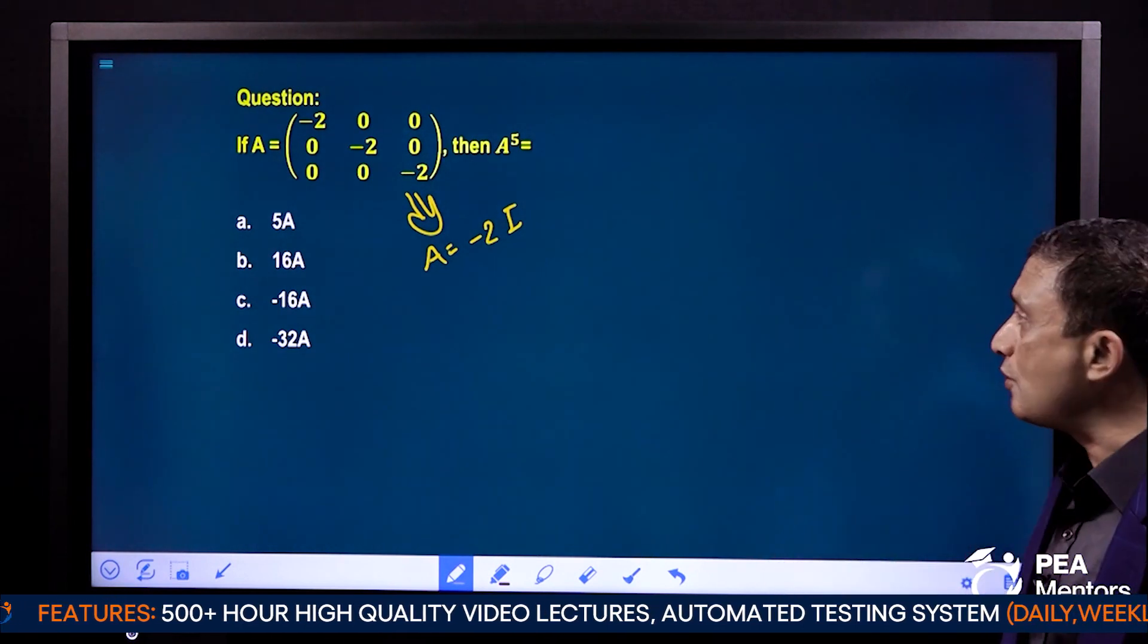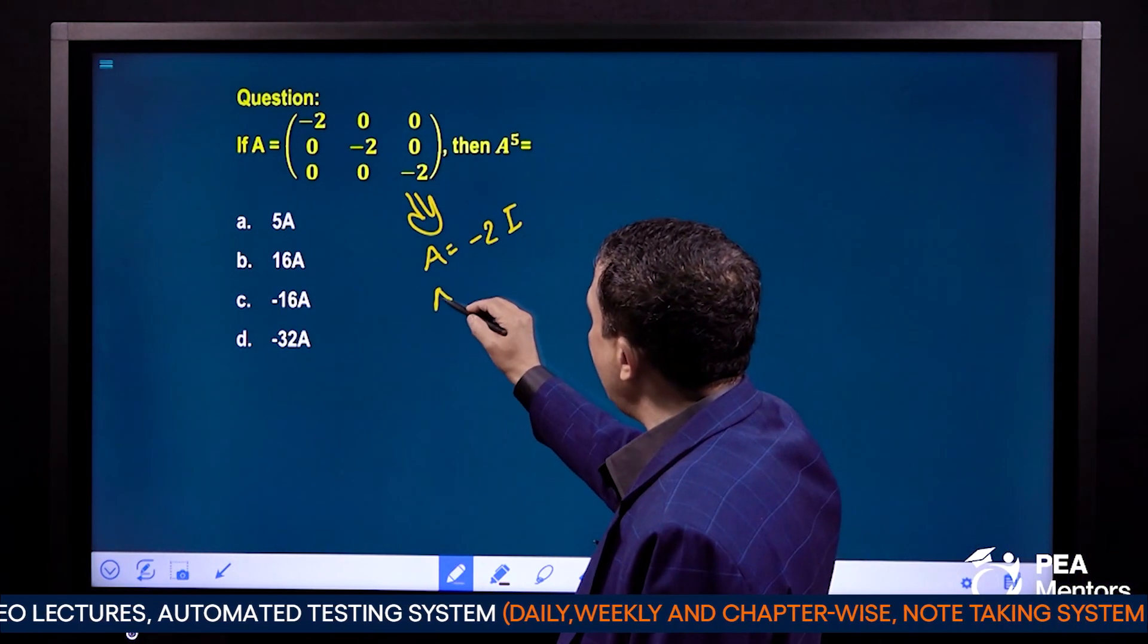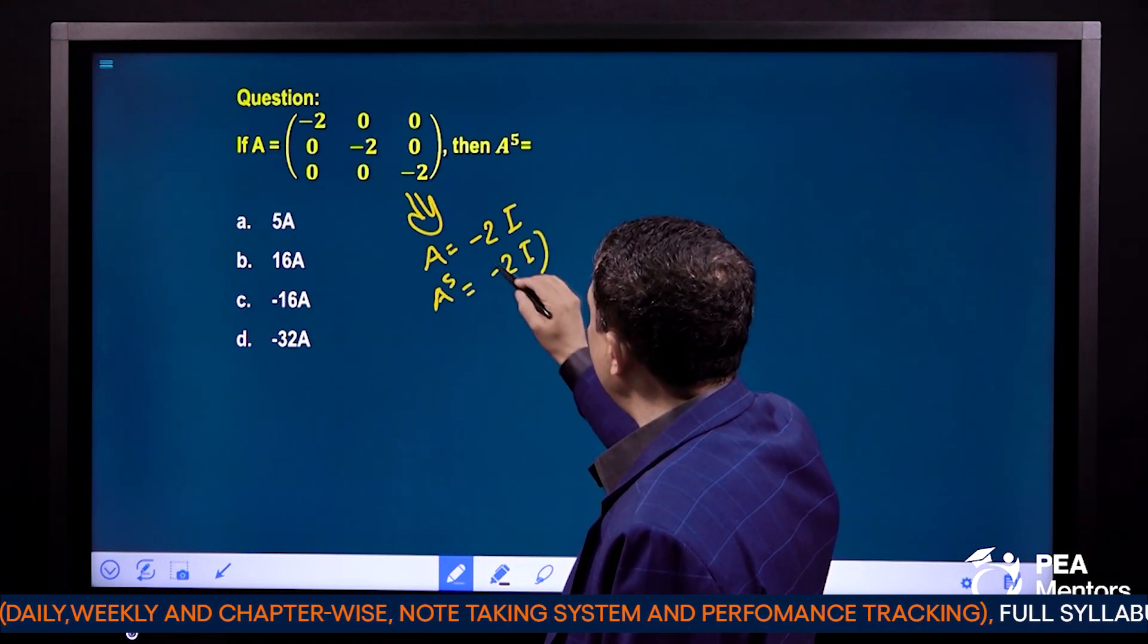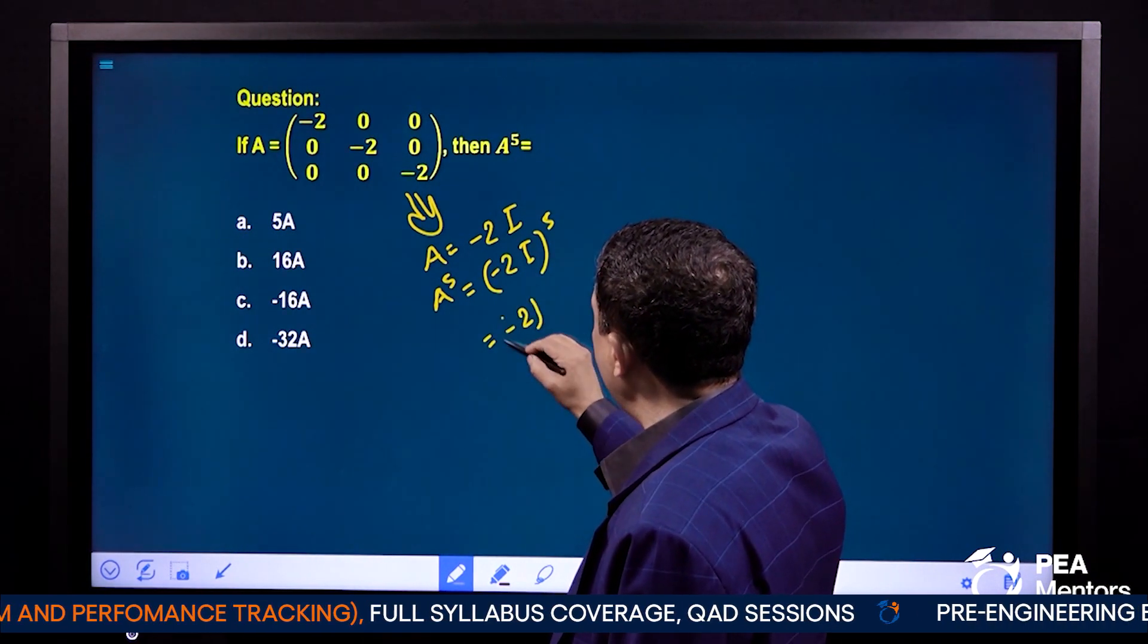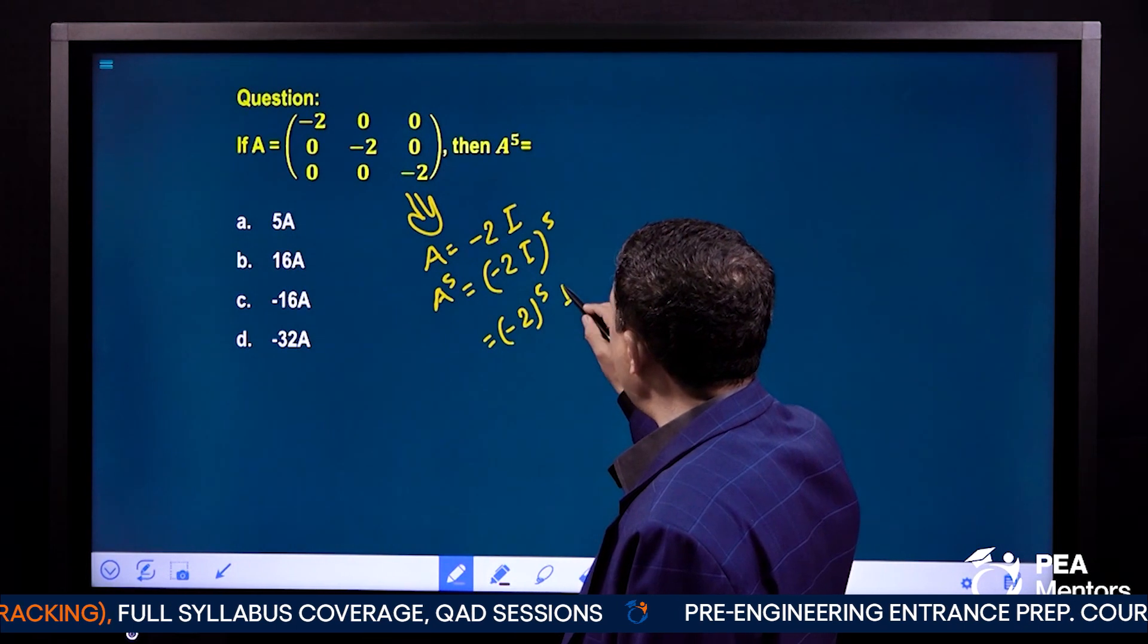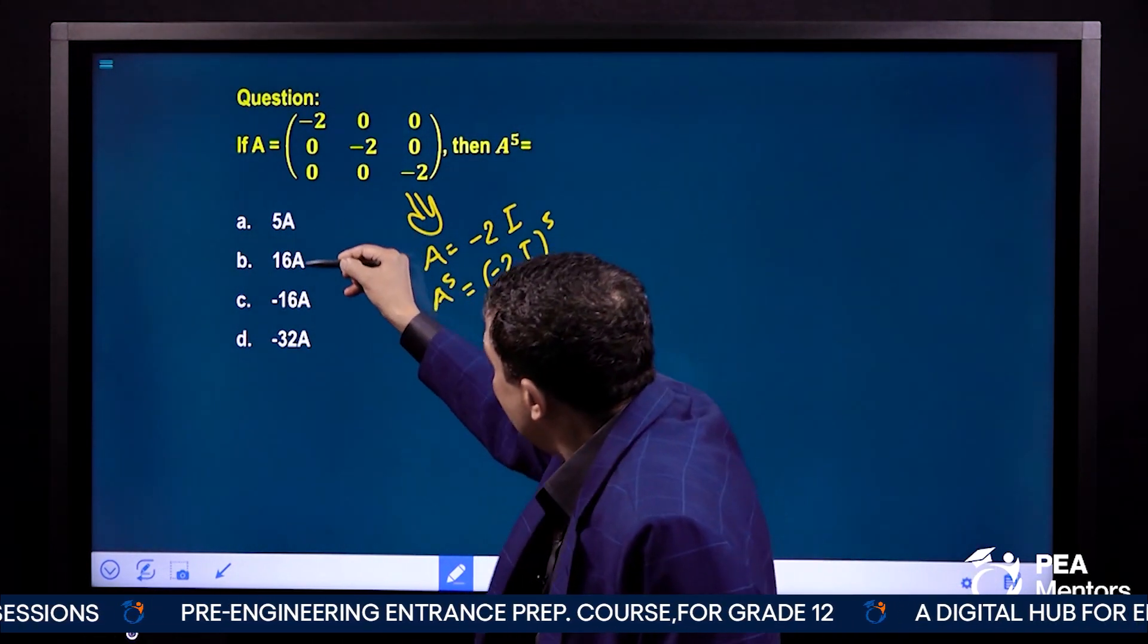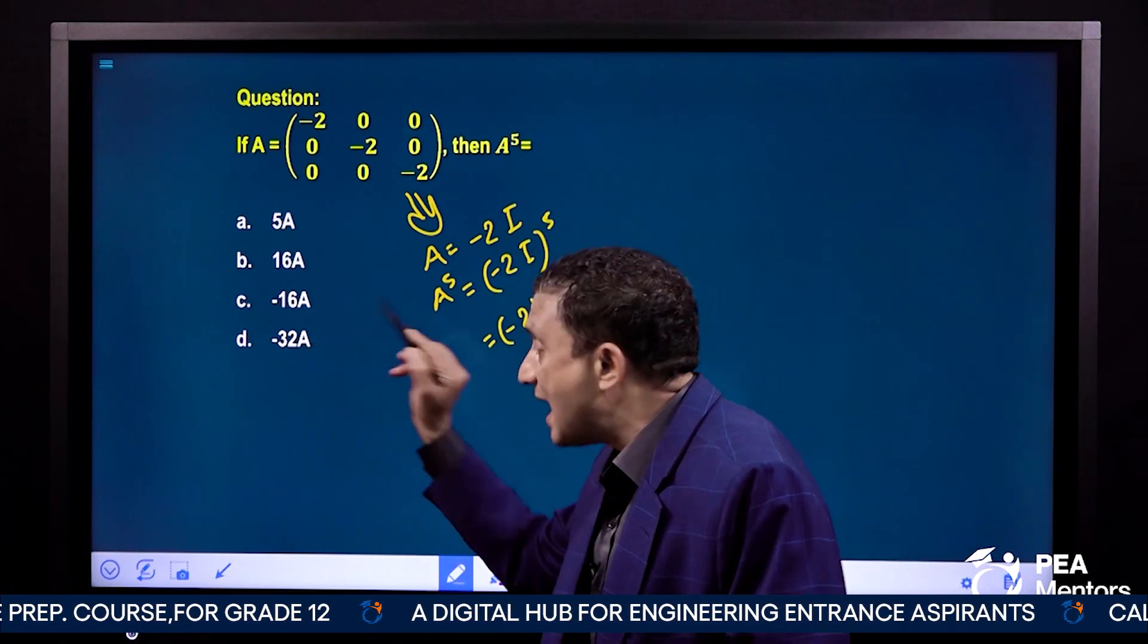If it is a common identity matrix, this way A to the power 5 is -2 times I to the power 5. This way, how much is it? -2 to the power 5 times I. This is our answer in terms of I. How much is it? -32I.